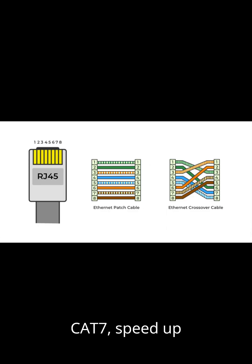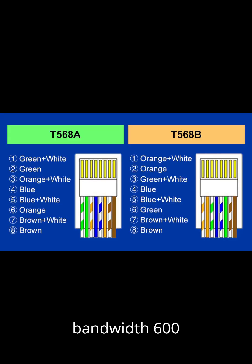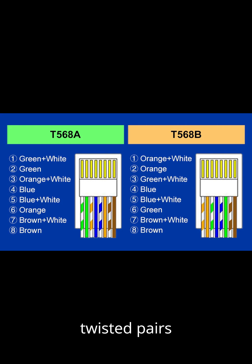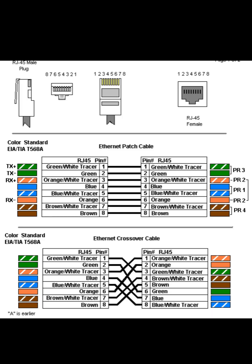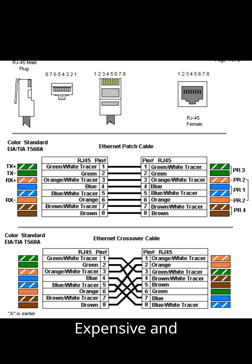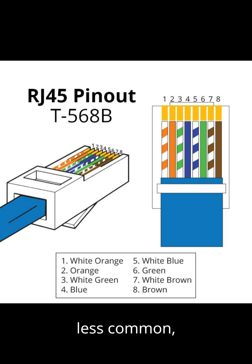5. CAT 7: Speed up to 10 Gbps, Bandwidth 600 MHz. Uses shielded twisted pairs (STP) to reduce interference. Expensive and less common, mainly used for professional setups.